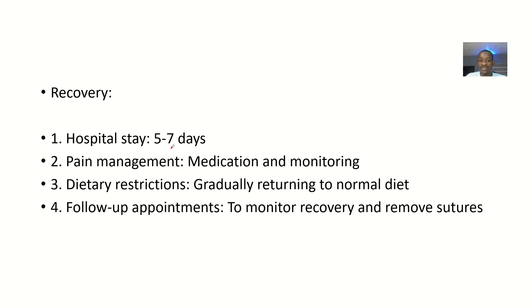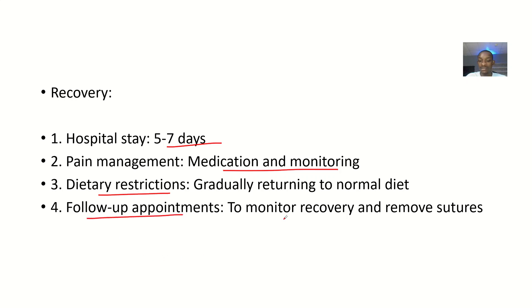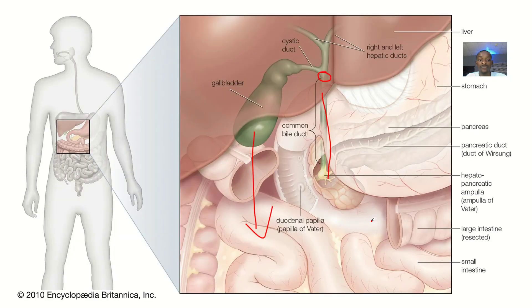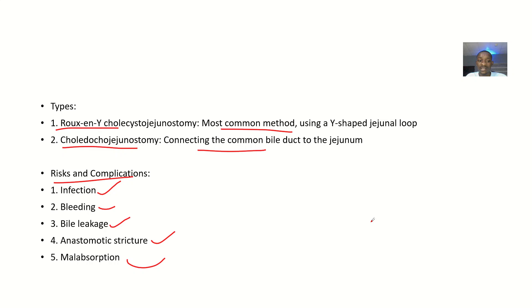For recovery time: hospital stay is usually about 5 to 7 days. Pain management involves giving medications and monitoring the patient. There are dietary restrictions, but after a while the patient can gradually return to their normal diet. Follow-up appointments are scheduled to monitor recovery and manage any strictures. That covers the choledochojejunal anastomosis, also known as choledochojejunostomy.